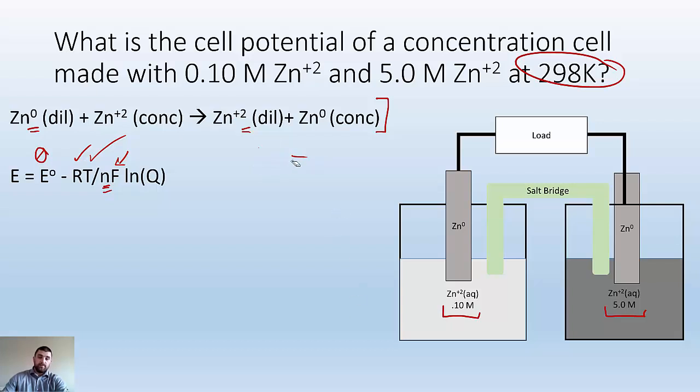Now Q, you got to look out for. This can get confusing. Remember, it's products over reactants. I always write out the equation and put concentrated and dilute so I can keep track. The product is the zinc+2 ion on the diluted side over the concentration of the concentrated side. I got 0.1 on the dilute side, so 0.1 over 5.0 on the concentrated side.